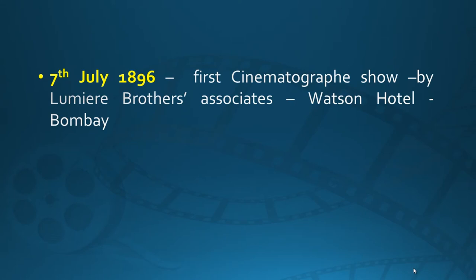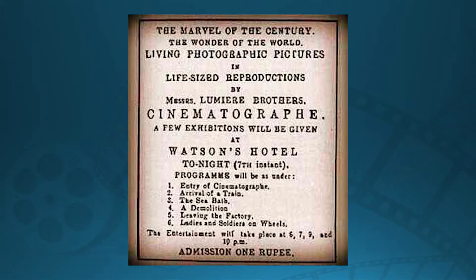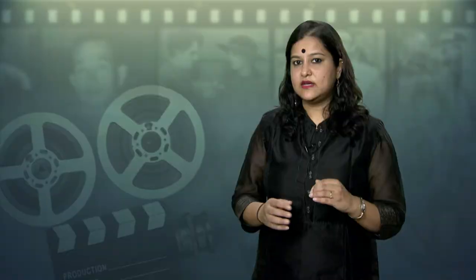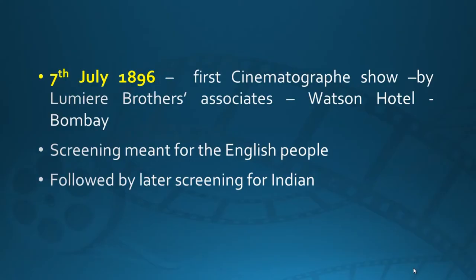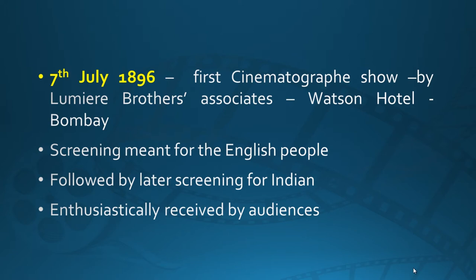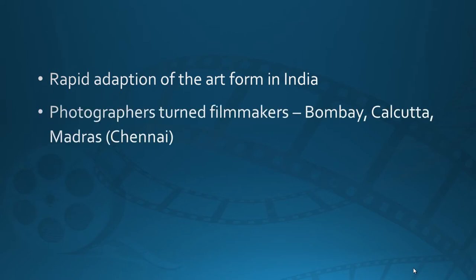In the year 1896, at least 6 different films from the Lumiere brothers were shown to the Indian public. This first screening was actually meant for the English people, as India at that point was under British rule. However, very soon this was followed by a screening for Indian audiences, and it was received very enthusiastically. People were really interested in how this concept of moving images was working. Seeing all of this, the art form of filmmaking was rapidly adapted by the Indian art industry, with photographers converting their studios for filmmaking.